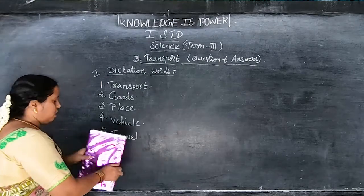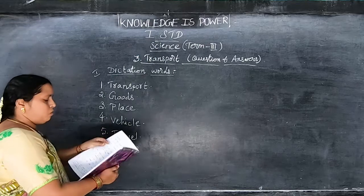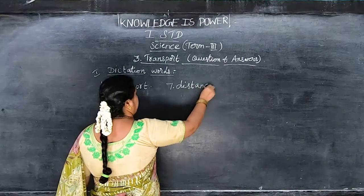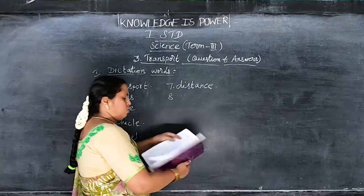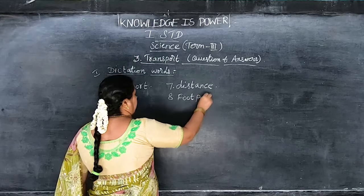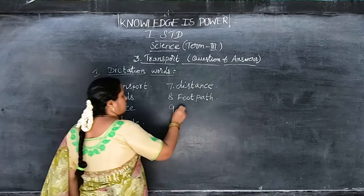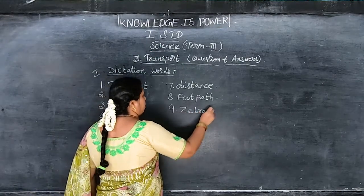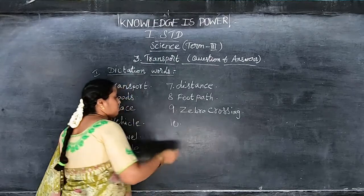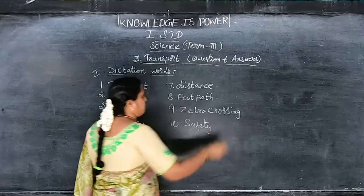While you are writing, say the spelling. Sixth one, people: P-E-O-P-L-E. Seventh one, distance: D-I-S-T-A-N-C-E. Eighth one, footpath: F-O-O-T, foot, P-A-T-H, path, footpath. Ninth one, zebra crossing: Z-E-B-R-A, zebra, C-R-O-S-S-I-N-G, crossing. Tenth one, safety: S-A-F-E-T-Y.